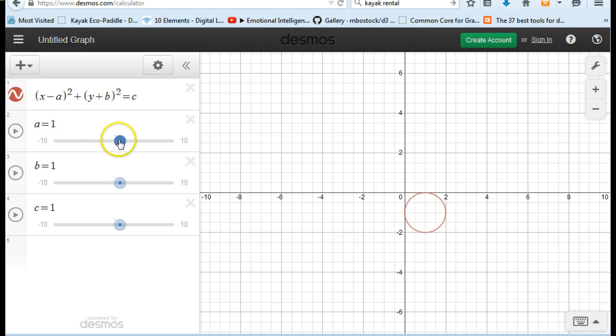Now, right now the value of a is 1. If I want to see what happens as the value of a changes, I just take the slider back and forth. If I want to see what happens as the value of b, I'll make this a negative. As the value of b changes, I take the slider back and forth, and the value of c.